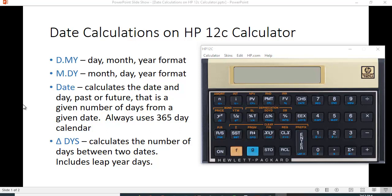The delta DYS key calculates the number of days between two dates, and it includes leap years. And there is a way to switch it so you can count it based on 30-day months, and I'll show you how to do that when we do a couple of examples.